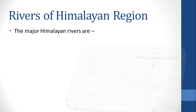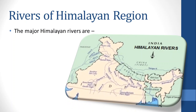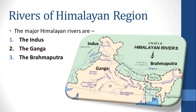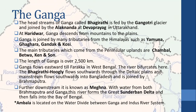In the previous video, we discussed the Himalayan rivers. The major Himalayan rivers are the Indus, the Ganga, and the Brahmaputra. In the previous video, we discussed the Indus river. Now we are going to discuss the Ganga river system.